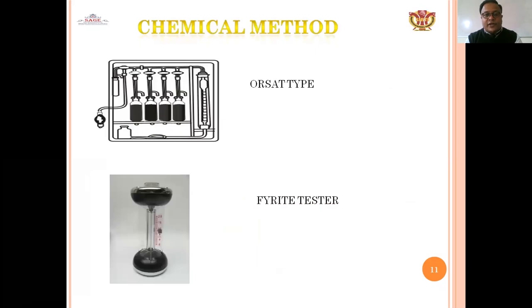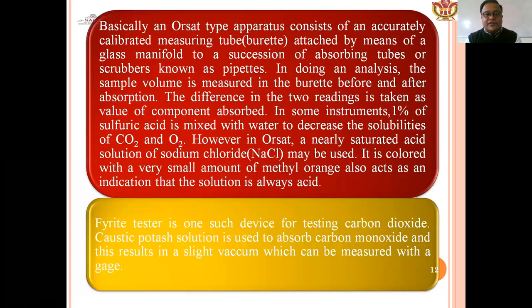Chemical methods include the Orsat type and the Ferritte texture. The Orsat-type apparatus consists of accurately calibrated measuring tubes attached via a glass manifold to a succession of absorbing tubes or scrubbers known as pipettes. In the analysis, sample volume is measured before and after absorption, and the difference in the two readings is recorded. Sulfuric acid mixed with water decreases the substitutes of CO2 and O2. The Ferritte texture is a device for testing carbon dioxide; caustic potash solution is used to absorb carbon monoxide, resulting in a slight vacuum which can be measured.